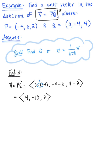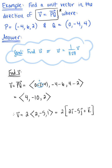Looking at these components, we realize they each have a common factor of 2. So for simplicity, let's go ahead and pull that out. We can say that vector v is defined as 2 multiplied by the vector (2, -5, 1). Or if you'd like, you could rewrite this as 2 multiplied by 2i-hat minus 5j-hat plus k-hat.